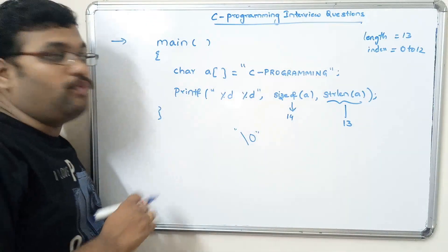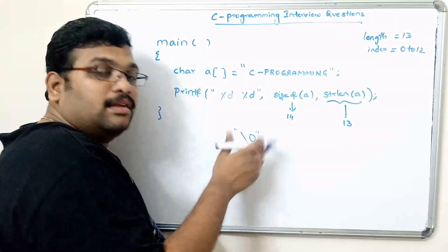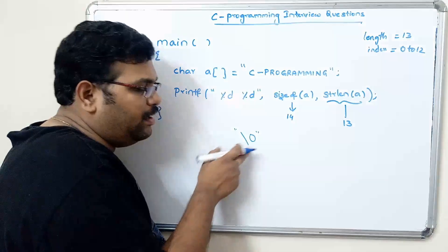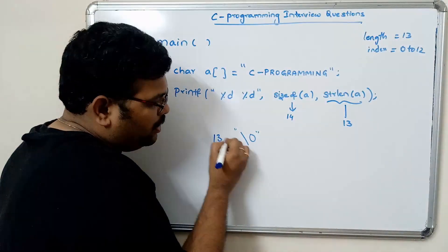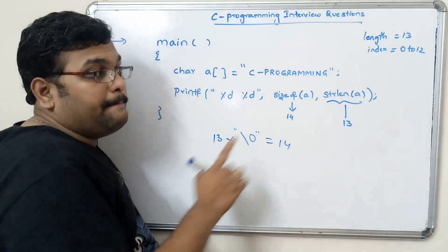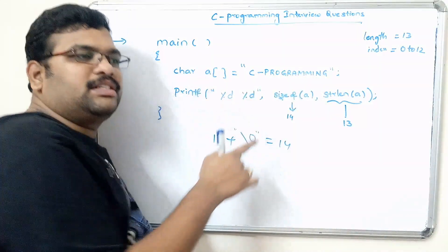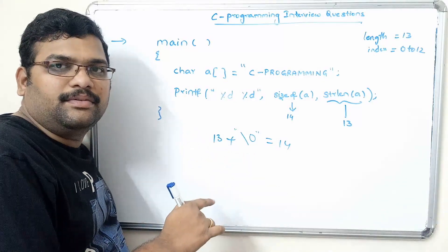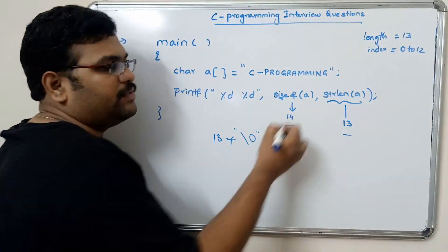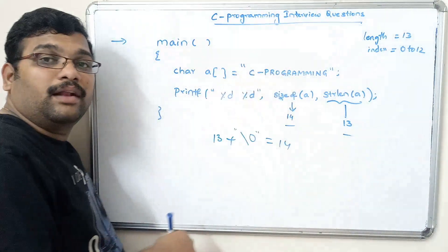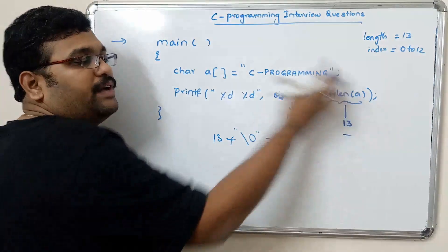By default, for a string the compiler will add the null character at the end. So the compiler is responsible for appending this null character. That's why the total is 13 plus this null character, which equals 14. But strlen returns the length of the string excluding the null character, so we get 13. The sizeof 'a' is 14 because it includes the null character.